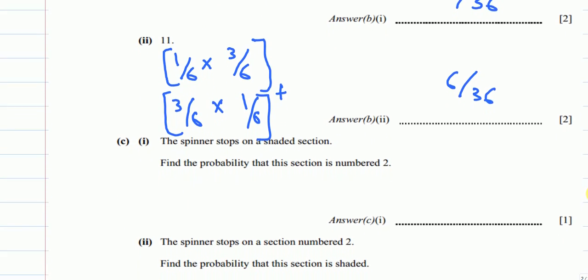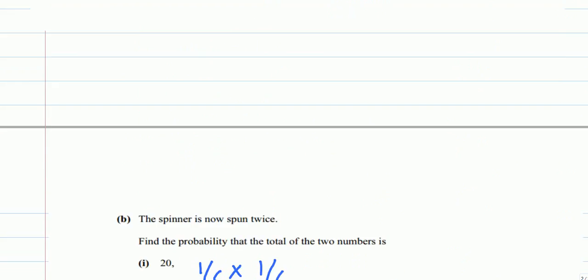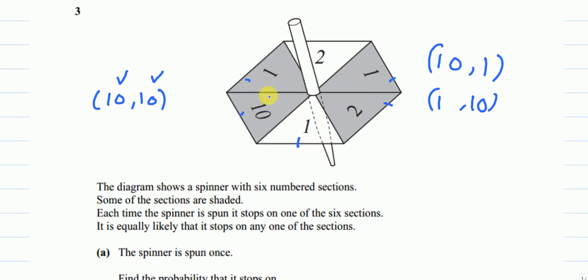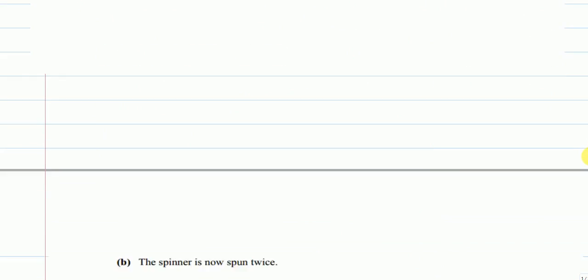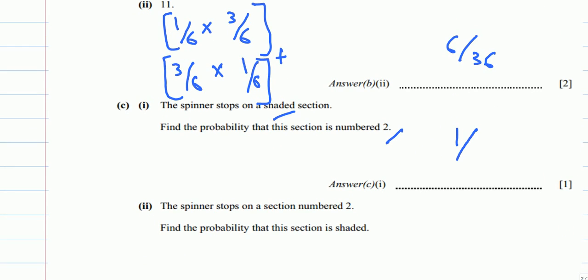Let's see C1. The spinner stops on a shaded section. Find the probability that this section is numbered 2. Out of the four shaded sections, how many are numbered 2? We have just one 2 that is shaded. So the answer is 1 out of 4.